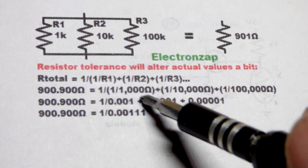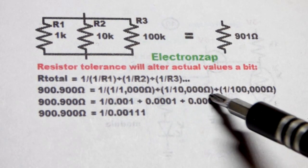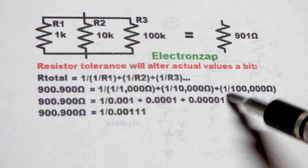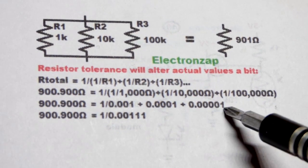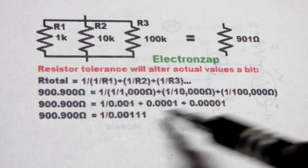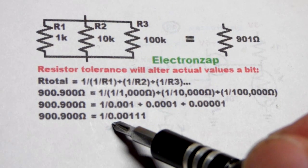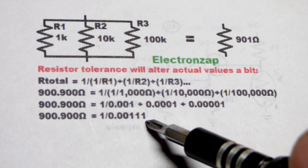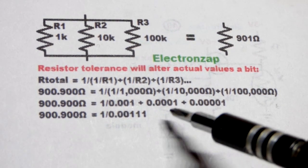But in any case, again, with R2, 1 divided by 10,000 will give us that result. And 1 divided by 100,000 will give us that result. We just keep doing that with all the resistors, and then we add up those values. So for this we'll get 0.0011 Siemens right there.